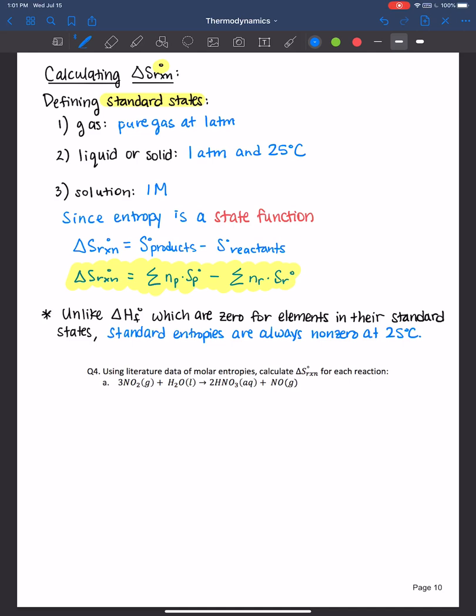So let's just go ahead and use the literature data of molar entropies to calculate the entropy of the reaction below. And so whenever I do thermodynamic calculations, I just like to organize everything in a table. And so the units here are joules per Kelvin mole, whenever you look up the molar entropies. And so for nitrogen dioxide is 240.1. So what I mean by making a table, I write the values directly underneath each species.